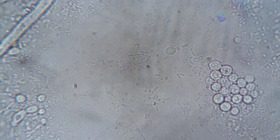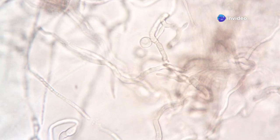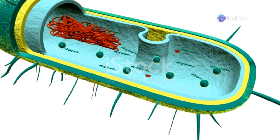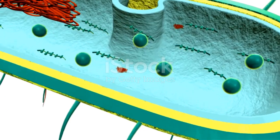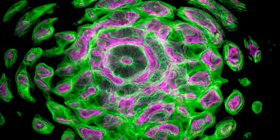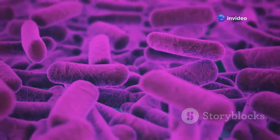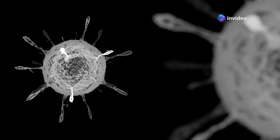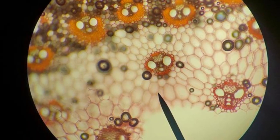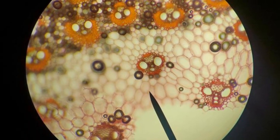Now let's meet the main players in the cell world: prokaryotic and eukaryotic cells. Prokaryotic cells are the simple, minimalist folks of the cell world. They're smaller and don't have a nucleus, which is like the cell's control centre. Bacteria are a great example of prokaryotes. On the other hand, eukaryotic cells are larger and more complex. Think of plants and animals — they're all made up of these sophisticated eukaryotic cells.